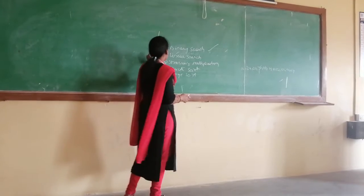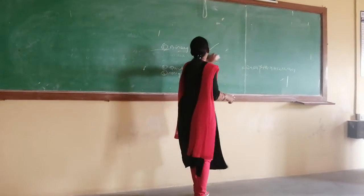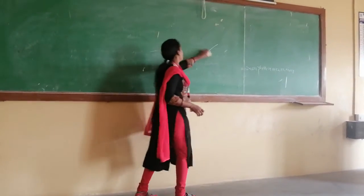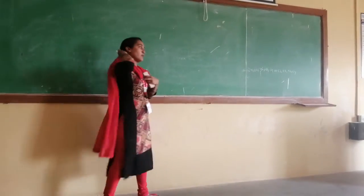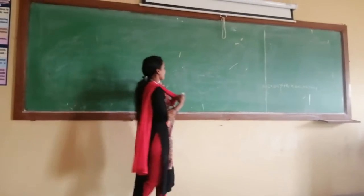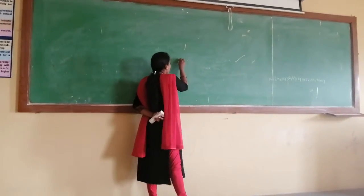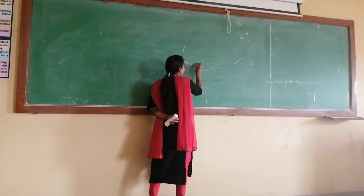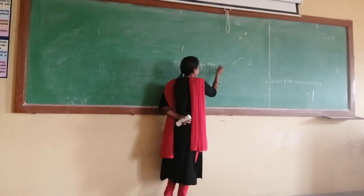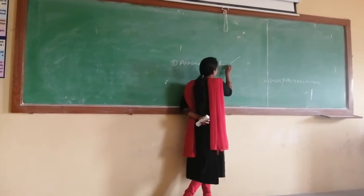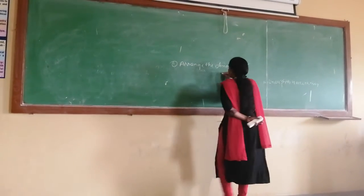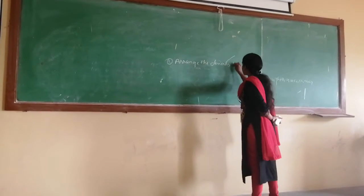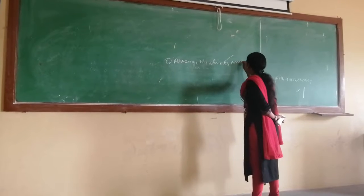Now we are going to know how to write the algorithm. First of all, if we want to perform binary search for different elements, we need to know the first step: arrange the elements. In the first step, we should arrange the elements in ascending order or descending order.